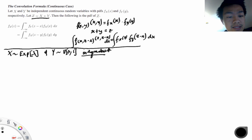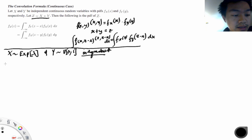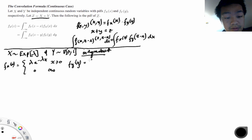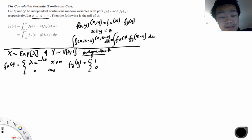We draw up the density functions. The density of x is fx = lambda * e^(-lambda*x) for x ≥ 0, and 0 otherwise. The density of y is fy = 1 for y in (0,1), and 0 otherwise.